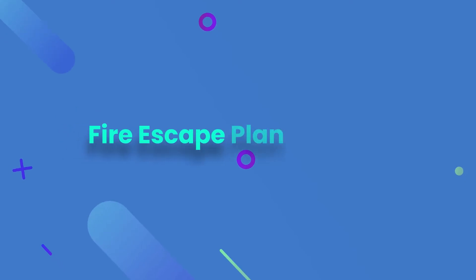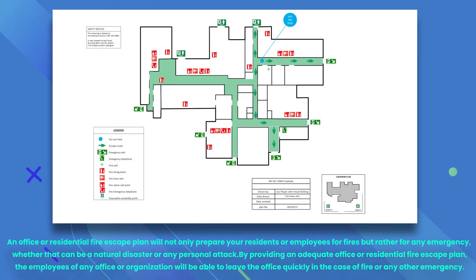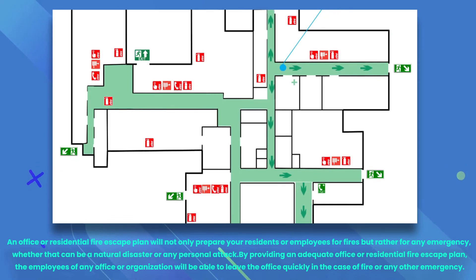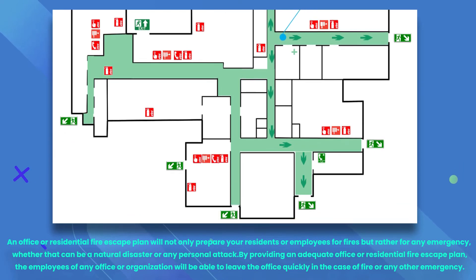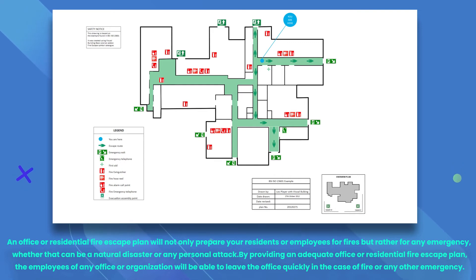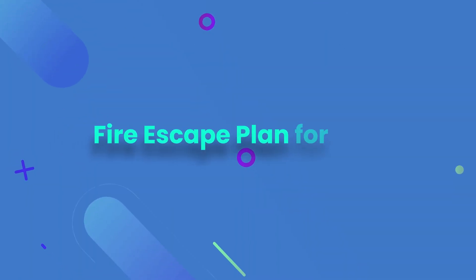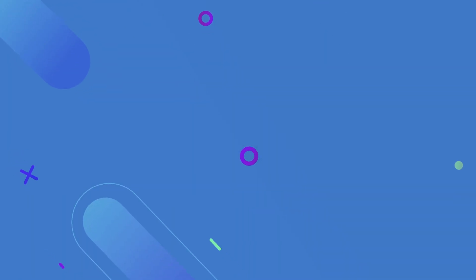An emergency fire escape plan for Excel — an office or residential fire escape plan — will not only prepare your residents or employees for fires but for any emergency, whether that be a natural disaster or a personal attack. By providing an adequate fire escape plan, employees of any office or organization will be able to leave quickly in the case of fire or any other emergency.